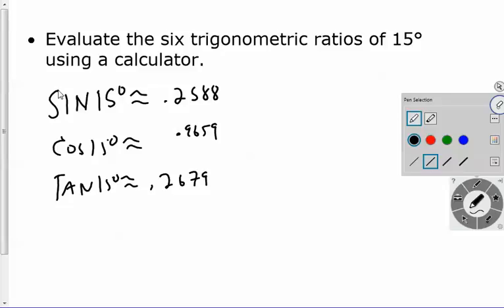But how do we get the three other ones? How do we get the cotangent of 15 degrees? How do we get that? How do we get the secant of 15 degrees, and how do we get the cosecant of 15 degrees? Well, if they're inverses of each other, all I really got to say is that this is basically one over the sine of 15 degrees.